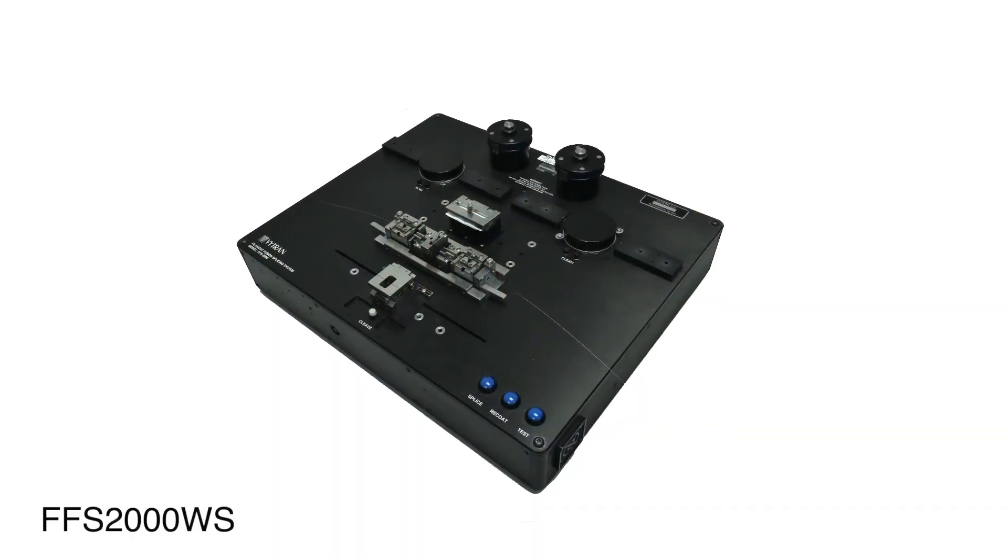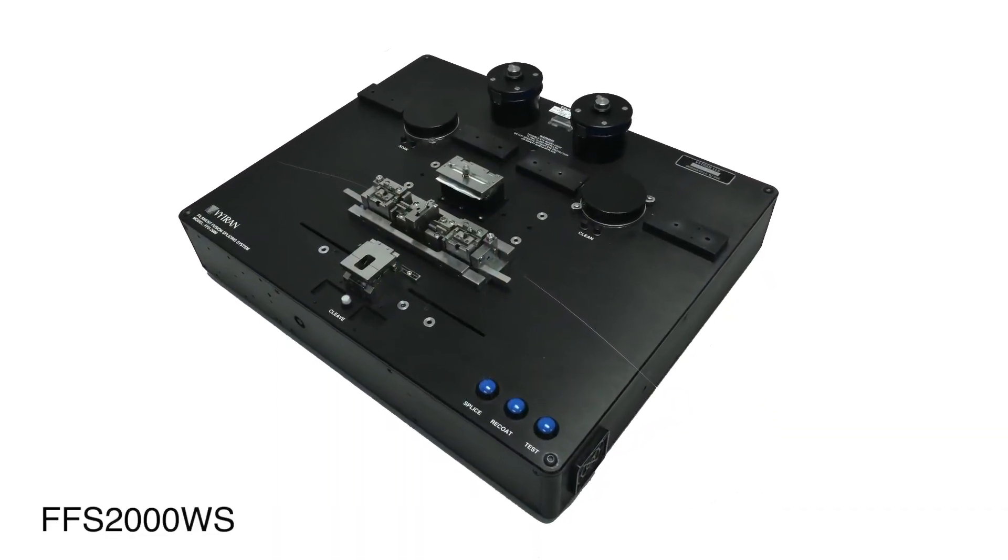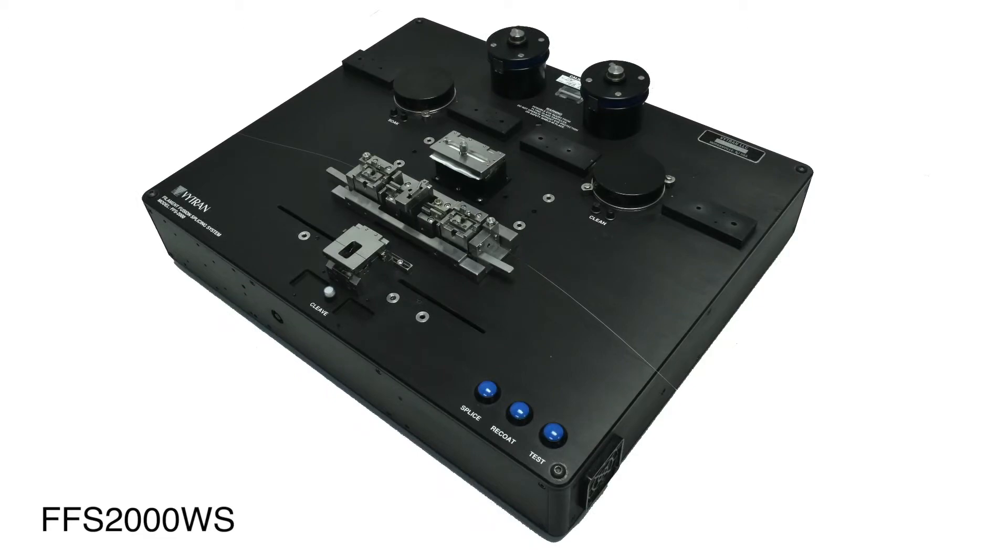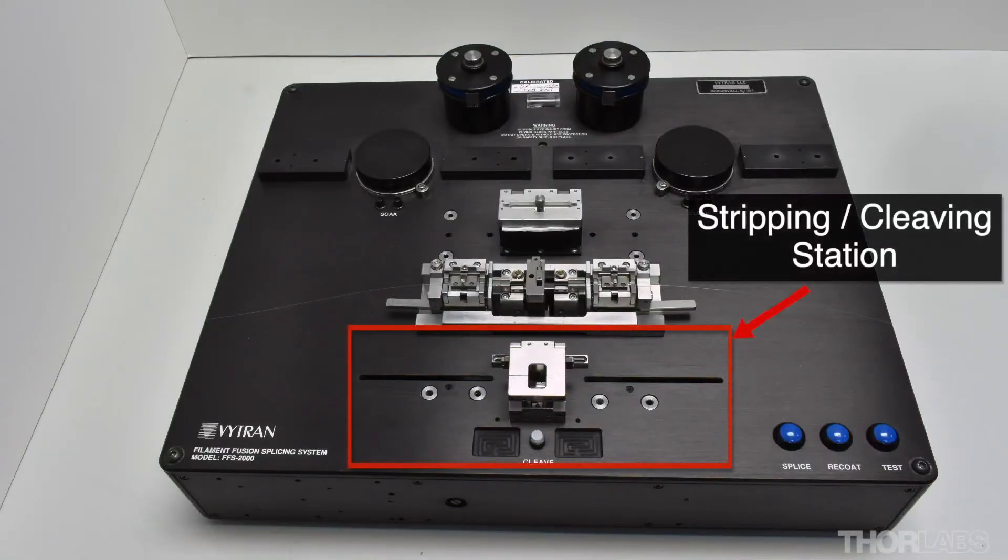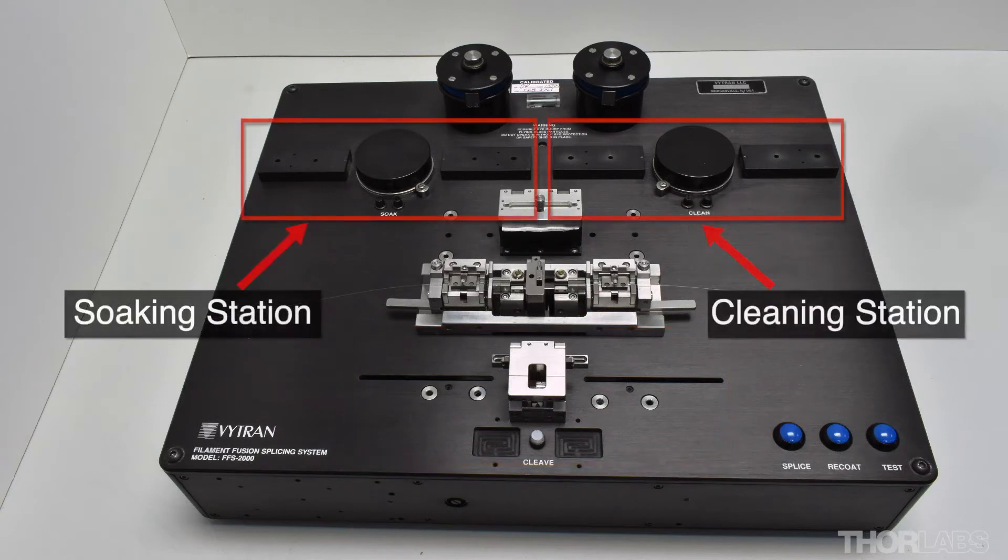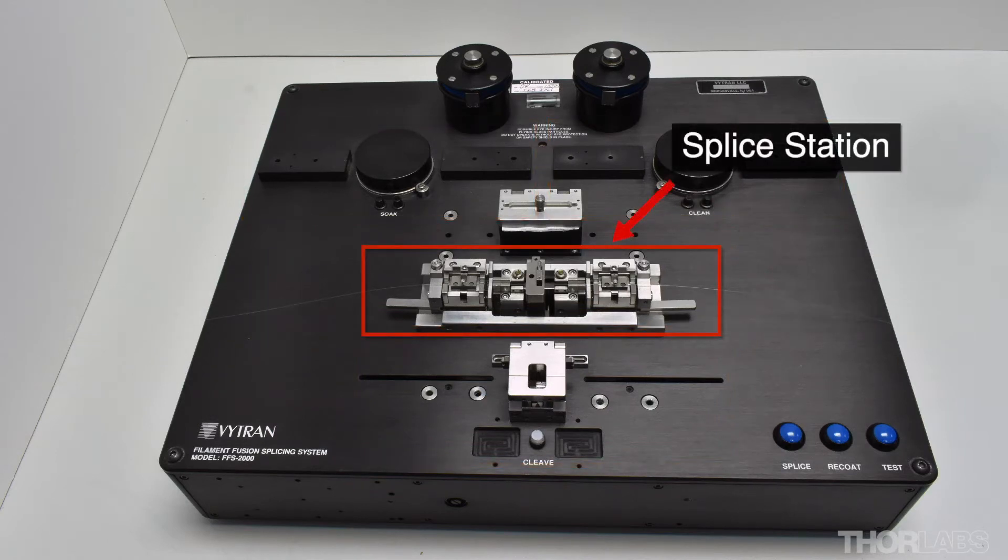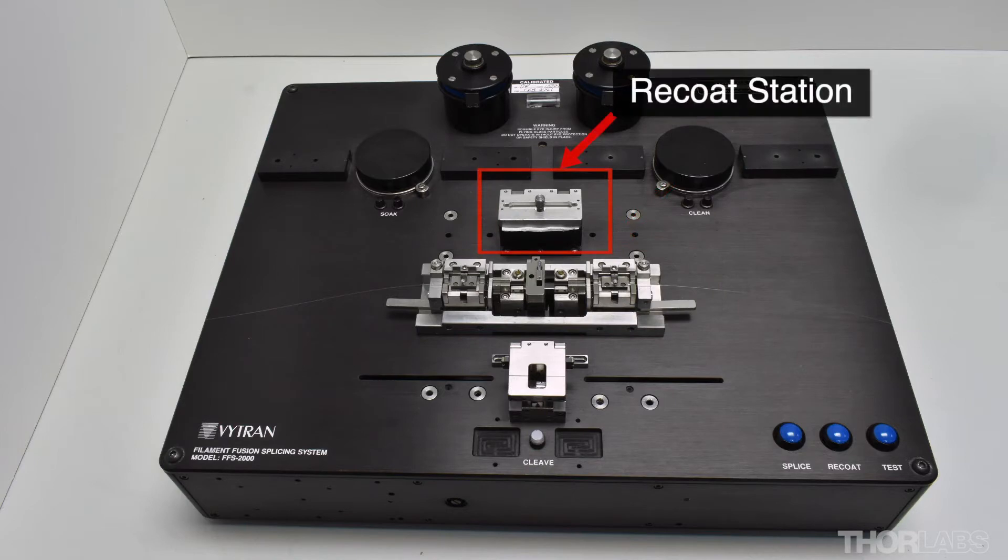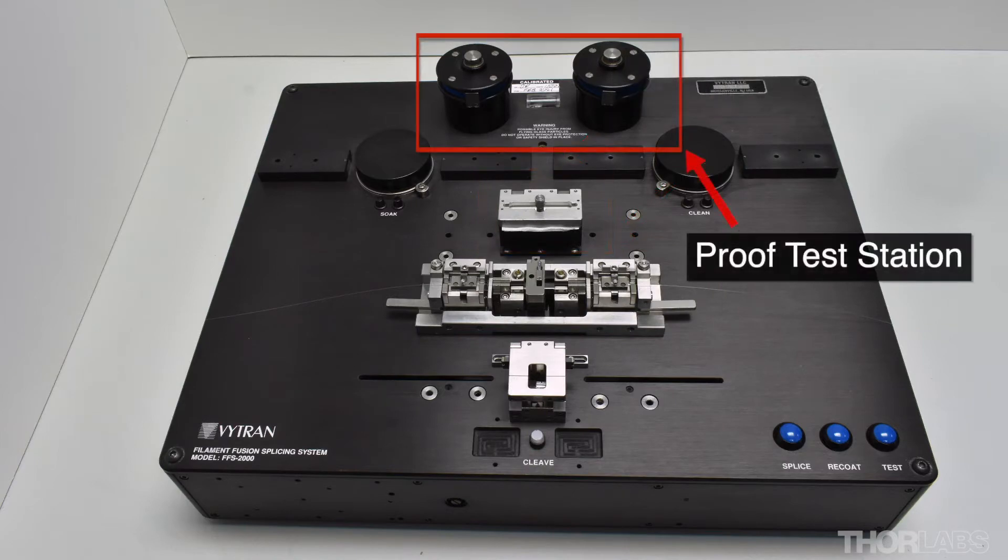The FFS2000 is a fusion splicing workstation which is capable of performing all steps of the splice process: strip, cleave, clean, splice, recoat and proof test.